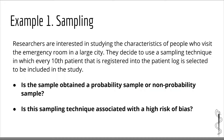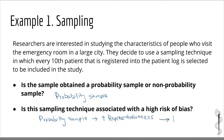Now let's look at an example. Researchers studying characteristics of emergency room visitors decide to select every tenth patient registered in the patient log. Based on this, the researchers are using a systematic sampling technique, which is a type of probability sample. Since every patient has a chance of being included, the sample is likely to be highly representative of the target population. High representativeness prevents selection bias, so this sampling technique is associated with a low risk of bias.